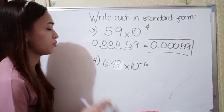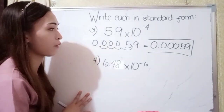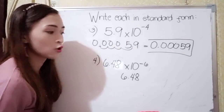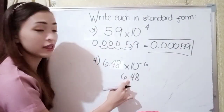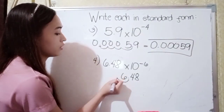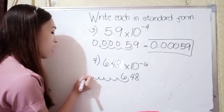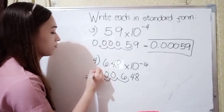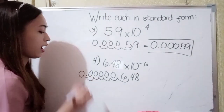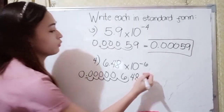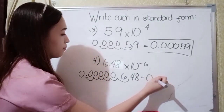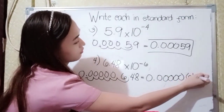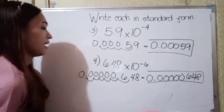For number 4, we have 6.48 × 10⁻⁶. Since the exponent is negative, we move the decimal point 6 units to the left. Starting from 6.48, counting: 1, 2, 3, 4, 5, 6. We add zeros to the left of our decimal point. Our answer in number 4 is 0.00000648.